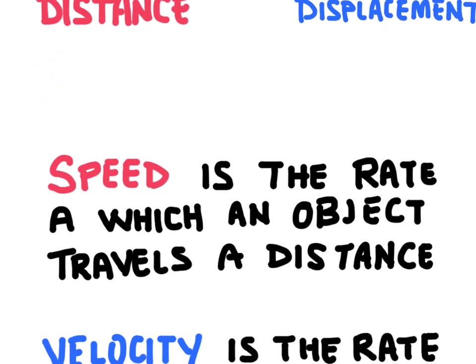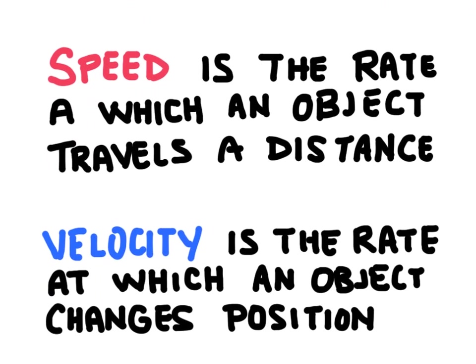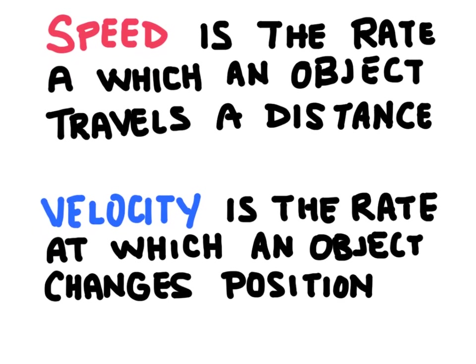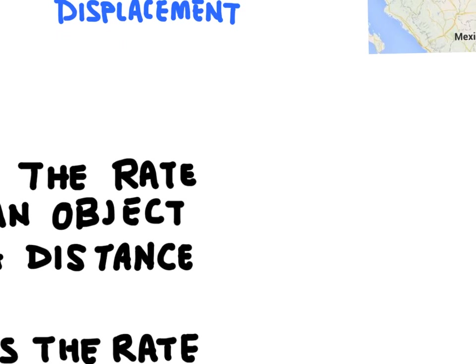Here's how we can define speed and velocity. Speed is the rate at which an object travels a certain distance, and velocity is the rate at which an object changes its position. They sound similar, but they are slightly different.